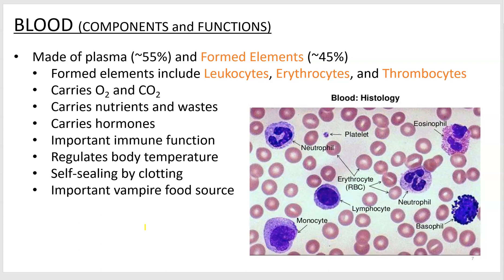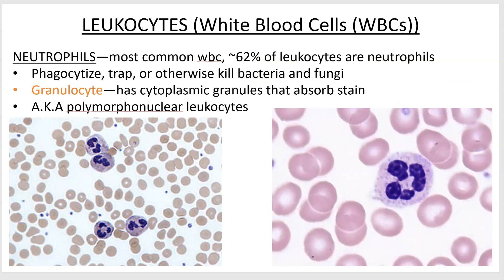The three groups are leukocytes or white blood cells, erythrocytes or red blood cells — that's what you think of probably when you think of blood — and then thrombocytes or platelets. We'll go in order from most common to least common, and we'll start with leukocytes. Red blood cells are far more common, but we'll deal with the leukocytes first.